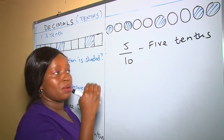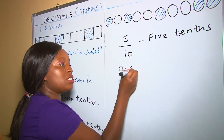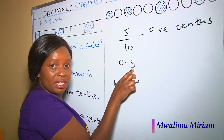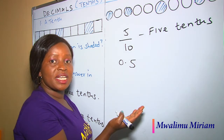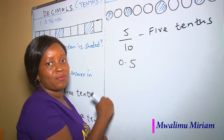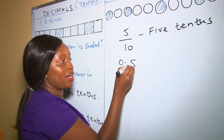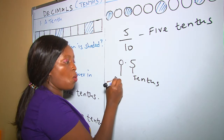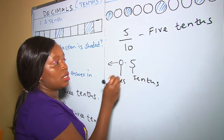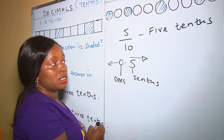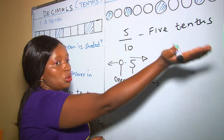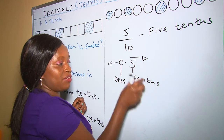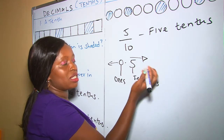Therefore, written as a decimal it is going to be 0.5, because after the decimal point the place value is tenths. So 0.5 is five tenths. The place value of 5 is tenths, and the place value of zero is ones. Numbers increase going to the left and decrease going to the right. Five tenths in words is still five tenths.